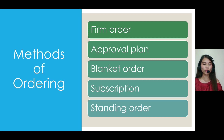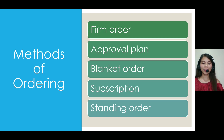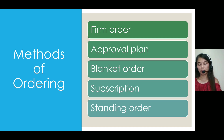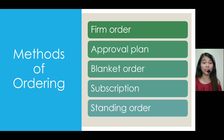Subscription is an agreement between the library and the publisher or vendor to supply a serial title — like an annual or quarterly — to be renewed and prepaid annually or on other intervals until cancelled. Standing order is an order sent by the supplier to the library as materials are published unless otherwise notified. Unlike subscriptions, standing orders must be paid in advance or are billed as each volume is shipped. This is typical for materials published in series.